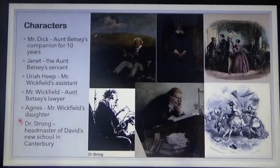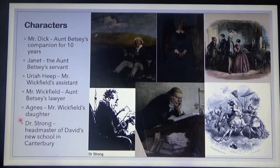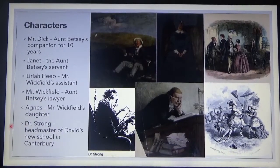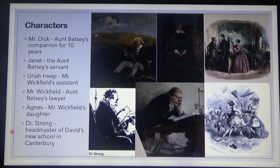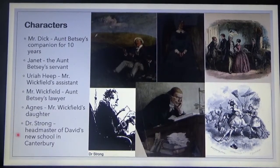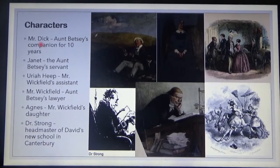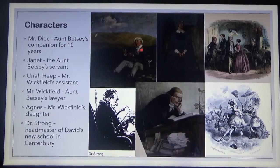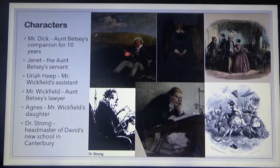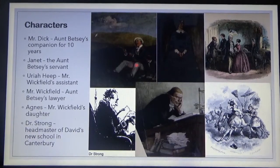First, let's deal with the story elements — the characters. We have the same characters discussed in the previous chapters, but we have new ones as well. In this chapter we shall be meeting Mr. Dick, Aunt Betsy's companion for 10 years. This is Mr. Dick, while teaching young David how to fly a kite.